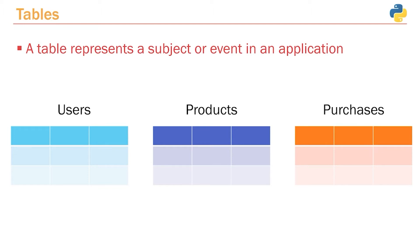Let's say we're building out an ecommerce application. You're going to have a table that represents each part of your application — a table for all of the users that have registered, a table for all of the different products you plan to sell, and tables for things like purchases and reviews. Each table represents a different subject or event in an application. And what's amazing is that all of these tables are going to form some sort of relationship — that's why it's referred to as a relational database.